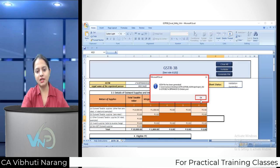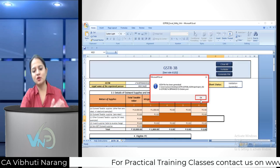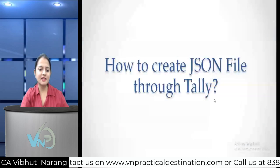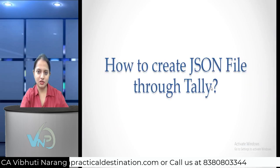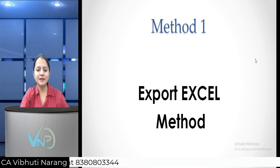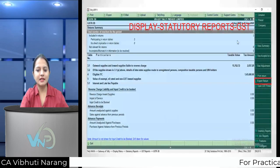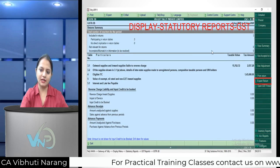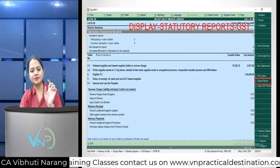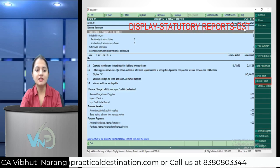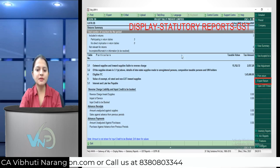The JSON offline utility is now created. Next, we look at how to upload this. The next method is the Tally JSON method. The first approach within Tally is the Excel method. In Tally, go to Display, then Statutory Reports, then GST, then GST 3B.